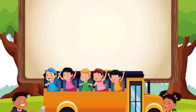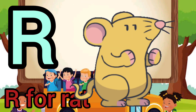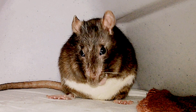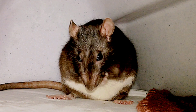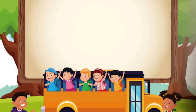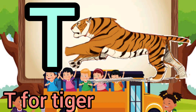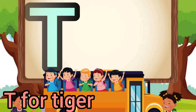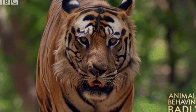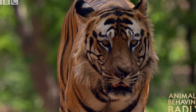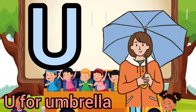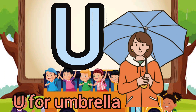R for Rat. S for Sun. T for Tiger. U for Umbrella.